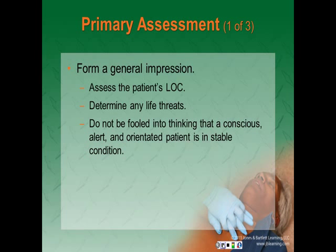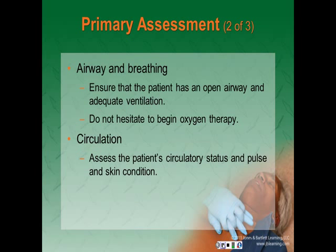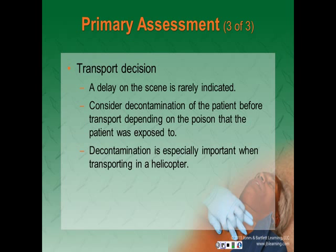Primary assessment: form a general impression from your doorway assessment, assess level of consciousness, and determine any life threats. Do not be fooled into thinking that a conscious, alert, and oriented patient is in stable condition — this may deteriorate rapidly. Quickly ensure the airway is open and ventilations are adequate; do not hesitate to begin oxygen therapy. Consider inserting an airway adjunct if the patient is unresponsive and assess circulatory status including pulse and skin color, temperature, and condition. Make your transport decision — scene delays are rarely indicated.